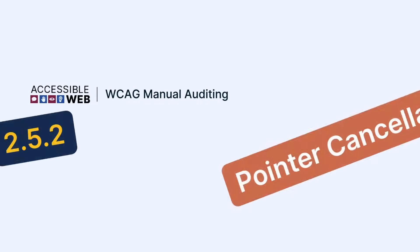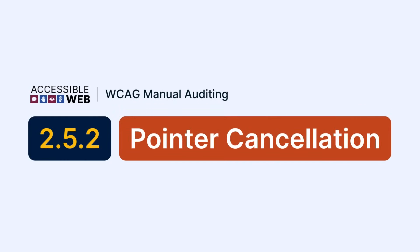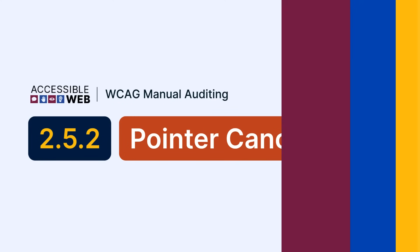Accessible Web — WCAG Manual Auditing. Success Criterion 2.5.2: Pointer Cancellation. In this video, we'll cover how to ensure that single pointer actions can be safely cancelled or reversed. Let's jump in.